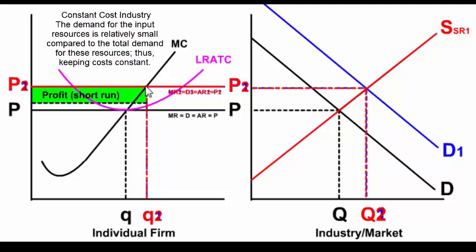Because the firm is earning above normal profits, other people see that they could use their resources in this type of industry and will enter the market to capture those profits. As they enter the market, supply shifts to the right, lowering the price in the industry and lowering also the price for the individual firm.